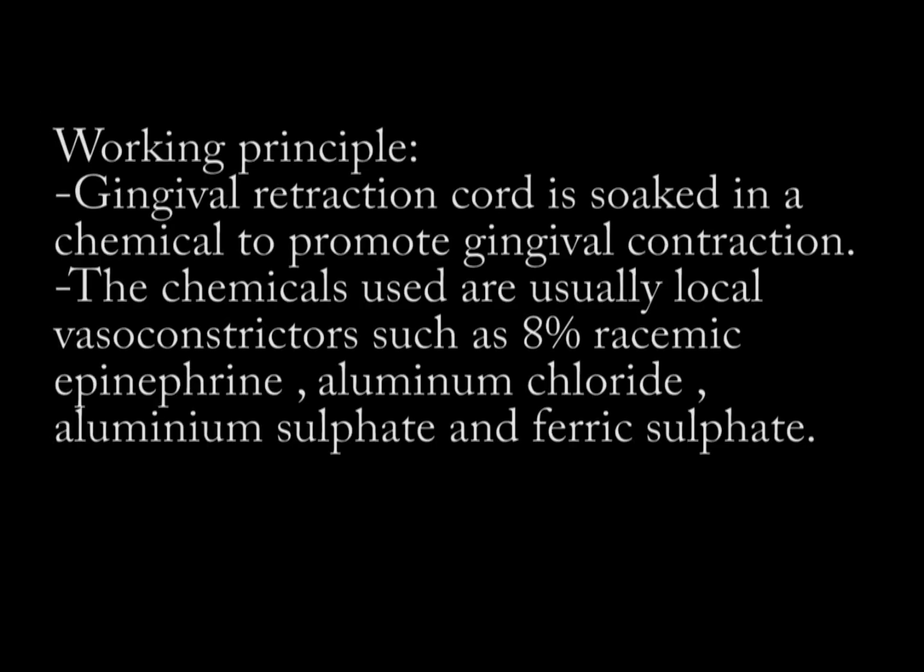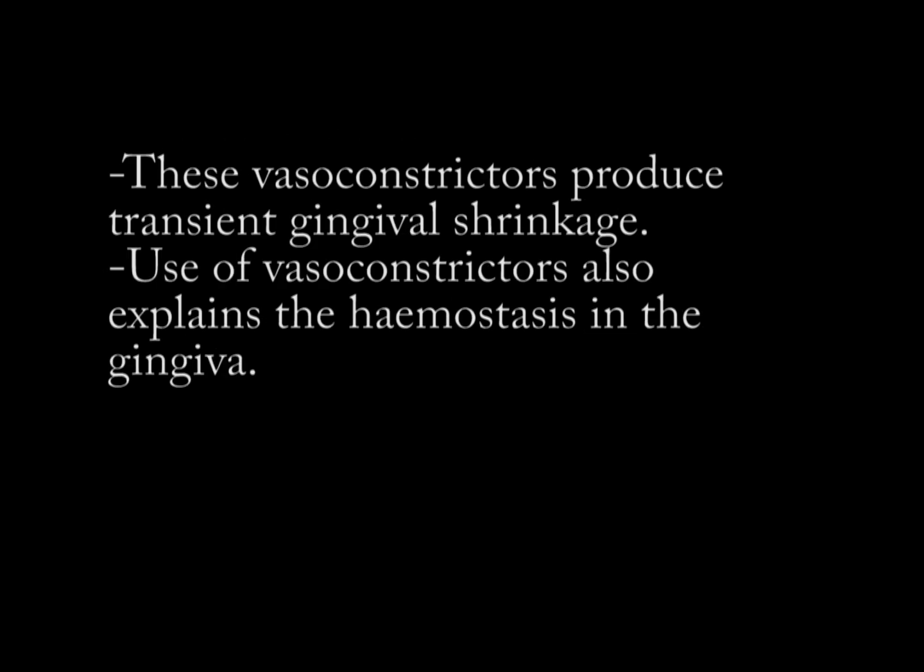Working principles include: gingival retraction cord is soaked in a chemical to promote gingival contraction. The chemicals used are usually local vasoconstrictors such as 8% racemic epinephrine, aluminium chloride, aluminium sulfate, and ferric sulfate. These vasoconstrictors produce transient gingival shrinkage. Use of vasoconstrictors also explains the hemostasis in the gingiva.